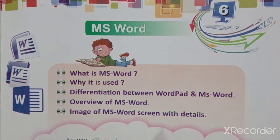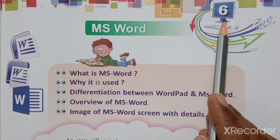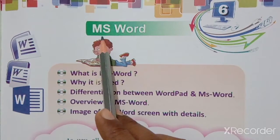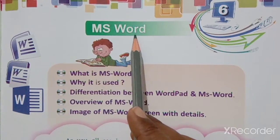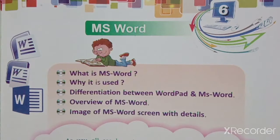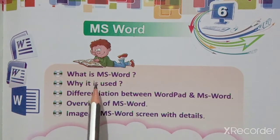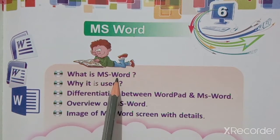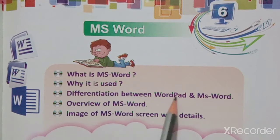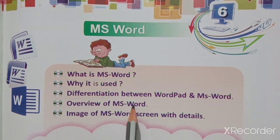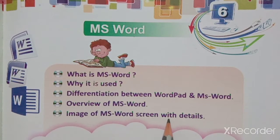Today we have to start chapter number six and the chapter name is MS Word. This is the first part of this chapter. We will cover: what is MS Word, why it is used, the difference between WordPad and MS Word, an overview of MS Word, and an image of the MS Word screen with detail.